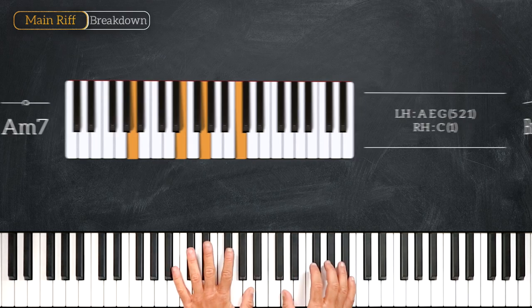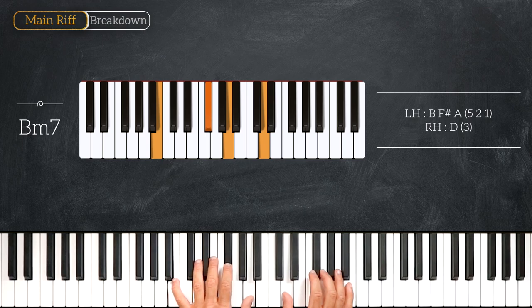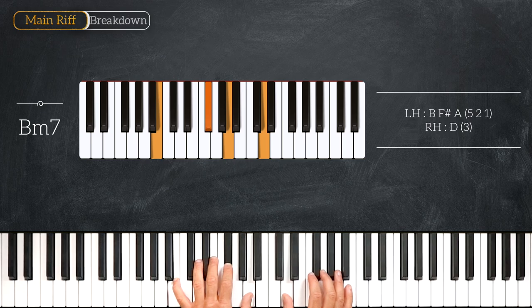And right after we will play this B minor 7, playing B, F sharp, A on the left and D on the right. Very nice.